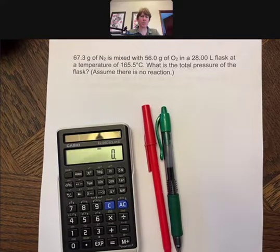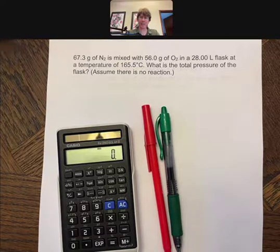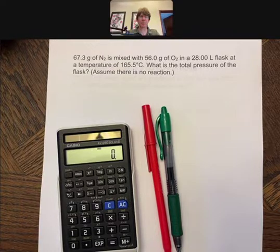67.3 grams of nitrogen is mixed with 56.0 grams of oxygen in a 28.00 liter flask at a temperature of 165.5 degrees Celsius. What is the total pressure of the flask?